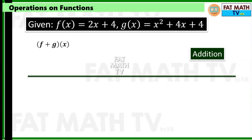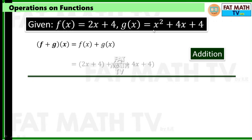We can have f plus g of x — this is the notation for the sum of f and g. f plus g of x is defined to be f of x plus g of x, meaning you just add f of x and g of x.